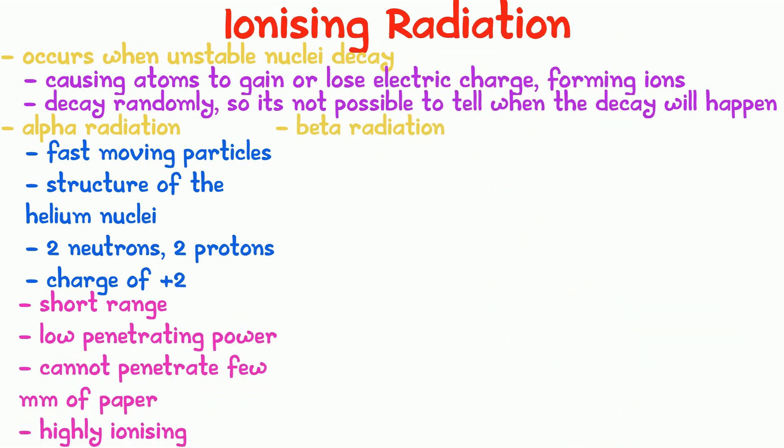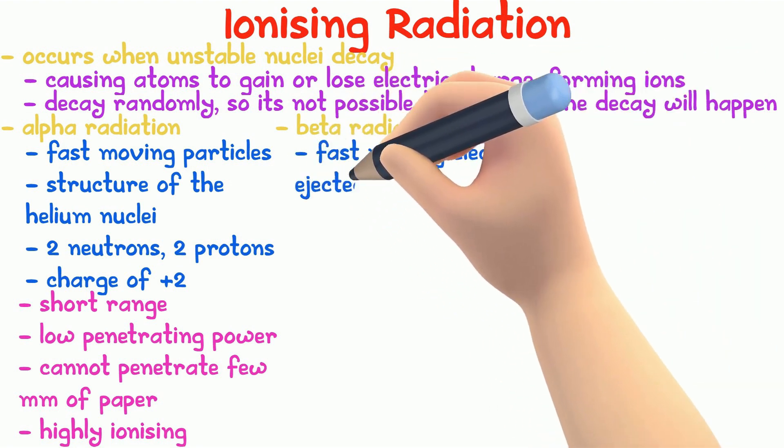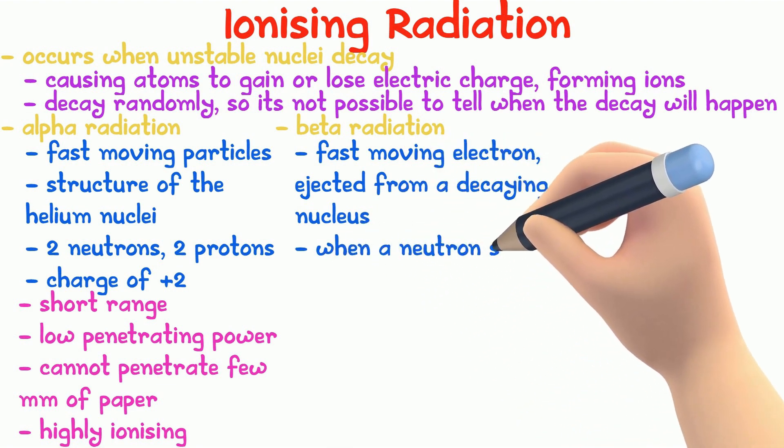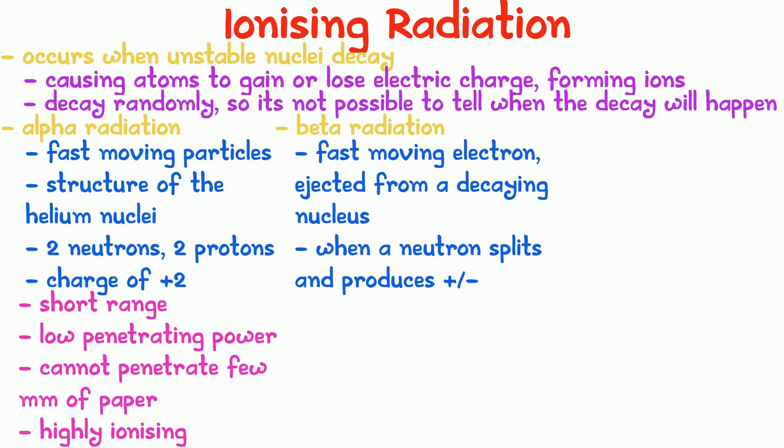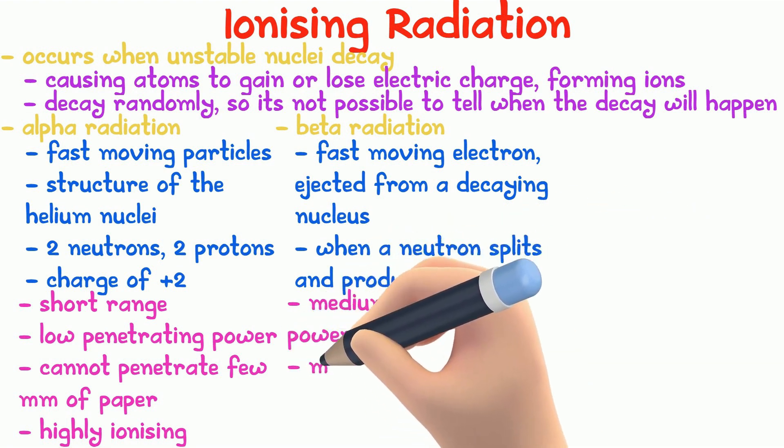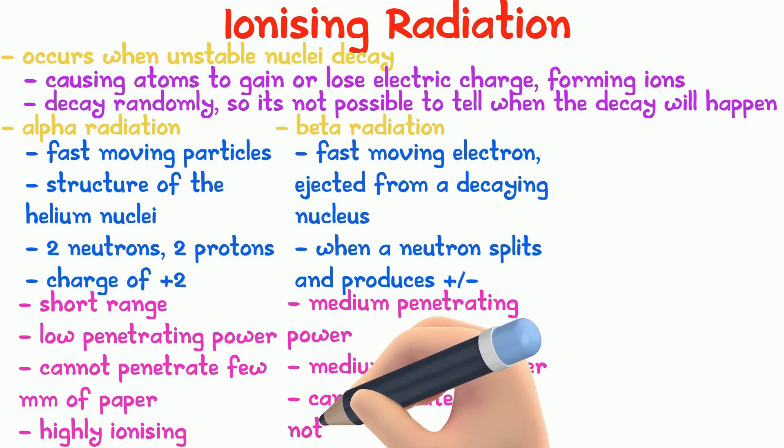Beta radiation. Beta particles are fast-moving electrons, ejected by a decaying nucleus. This occurs when a neutron splits into a proton and electron. The proton remains in the nucleus while the electron is ejected. A few features they have: they have a medium ionizing power, medium penetrating power, can penetrate paper but not thin aluminum.